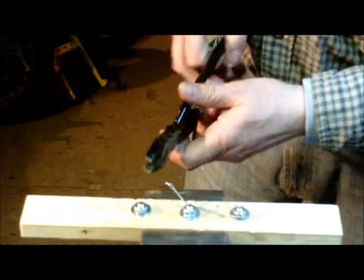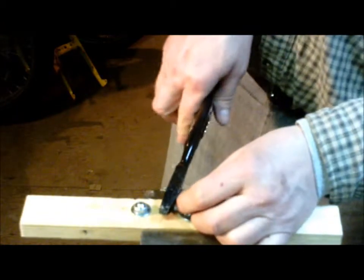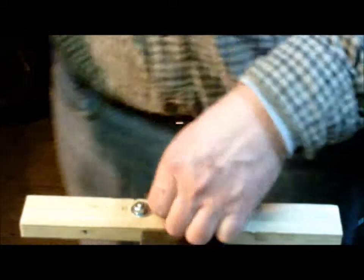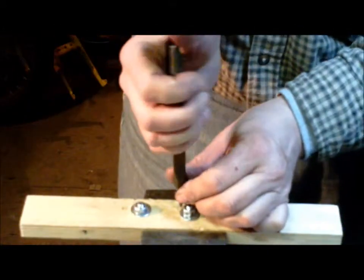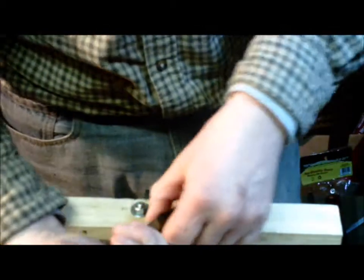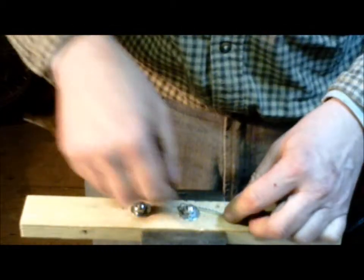Take the pliers, cut off the excess. And use your needle nose to twist them around so you don't have a sharp edge that'll spike you.